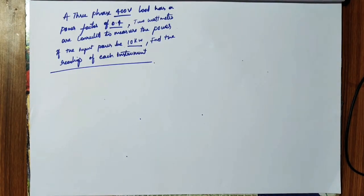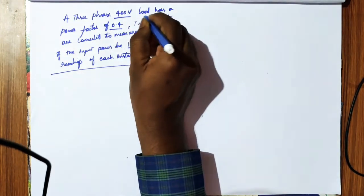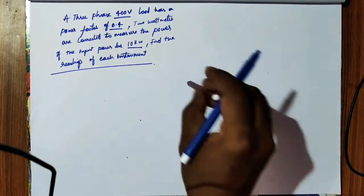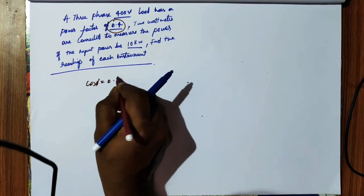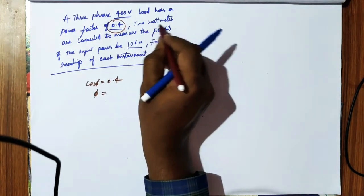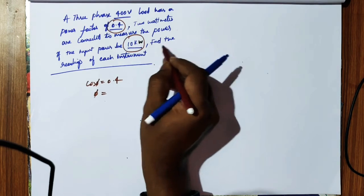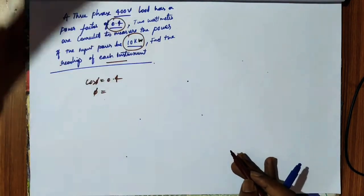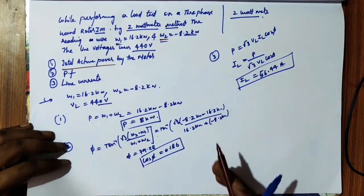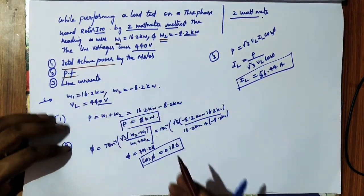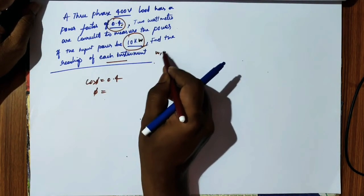Here is one more type of problem. A 3-phase system with line voltage 400V is given, with a power factor of cos(phi) = 0.4, and two watt meters connected to measure power. The input power is 10 kilowatts. Find the readings of each watt meter, W1 and W2. Previously W1 and W2 were given to find active power; now active power and power factor are given to find W1 and W2.